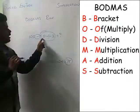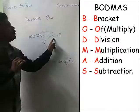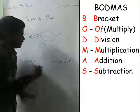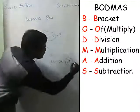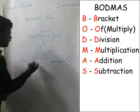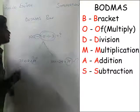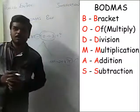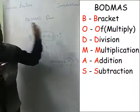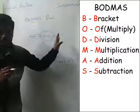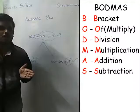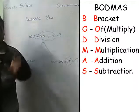So, divide 50 by 2 to get 25, and then 100 minus 25 is 75. So 75 is the right answer, not 25. This is the BODMAS rule — not only for the simplification topic, but in all topics we are going to follow this rule.